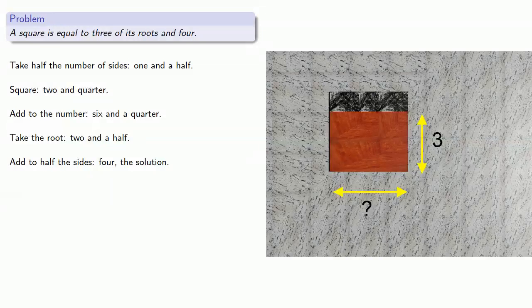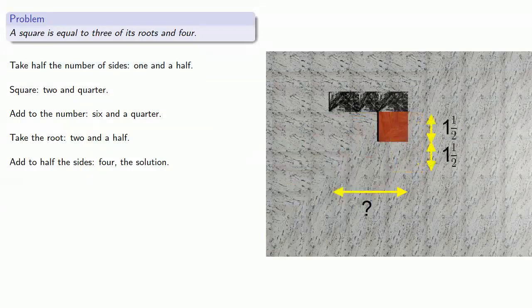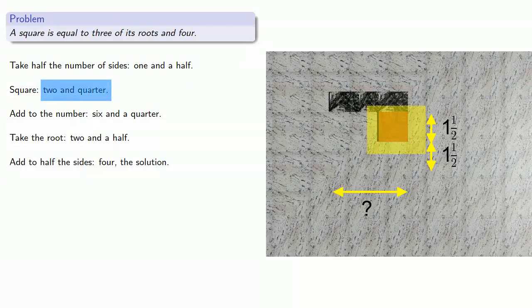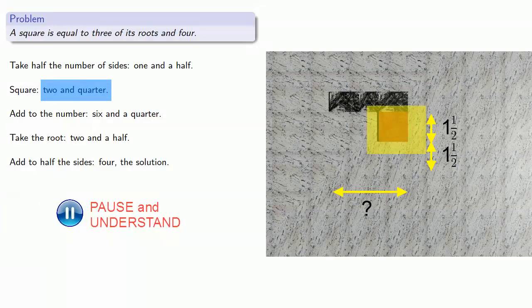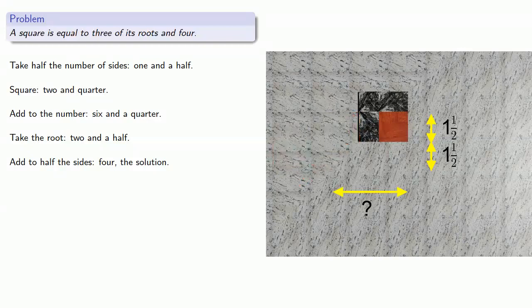Now take half the number of sides, that's 1 and a half, so we'll cut our side and square it, and so this square has area 2 and a quarter. Now if we cut off from the remaining part a segment equal to the square, we can do a little rearranging of the pieces. And remember the area doesn't change, so this portion still has area 4.